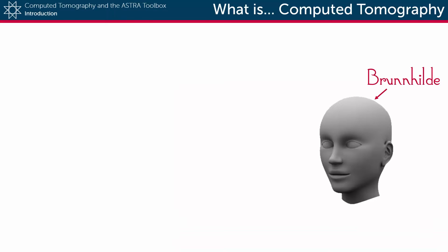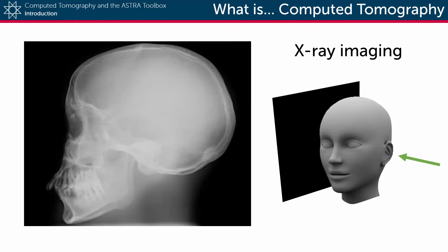Say hello to Brunilde — let's say we want to know what is going on inside her head. To do so, we could take an X-ray image on which we can clearly see things like her skull, her teeth, and her brain. However, as such an image is a two-dimensional projection of a three-dimensional object, information is obviously going to be lost. If the unfortunate Brunilde were to have a brain tumor, we could determine from this image that it's near the back of her head, but not whether it is in the left or the right hemisphere of her brain.